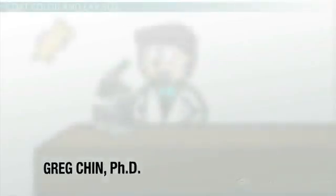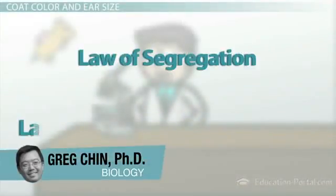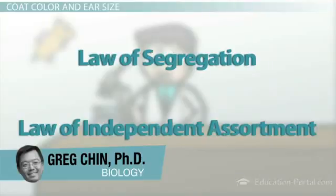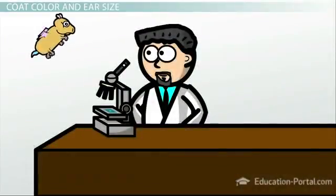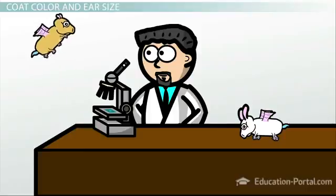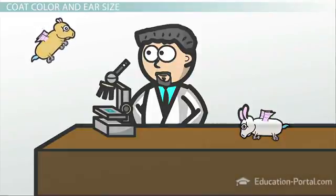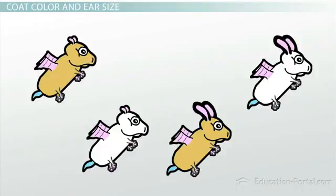When we were studying coat color, we saw how Mendel's Law of Segregation and Law of Independent Assortment could help us predict how chromosomes segregate into gametes. By applying Mendel's laws to our studies of coat color and ear size, we determined that apparent heterozygous at two loci can produce four different gametes.